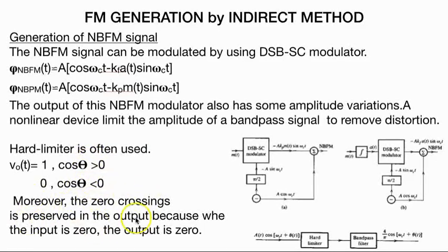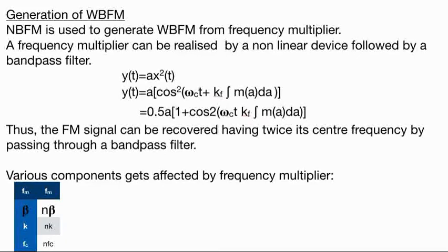Moreover, the zero crossings are preserved in the output because when the input is zero, the output is zero. You can see there is a hard limiter which is passed through a bandpass filter to get the particular signal. Hence, it is the generation of NBFM signal.